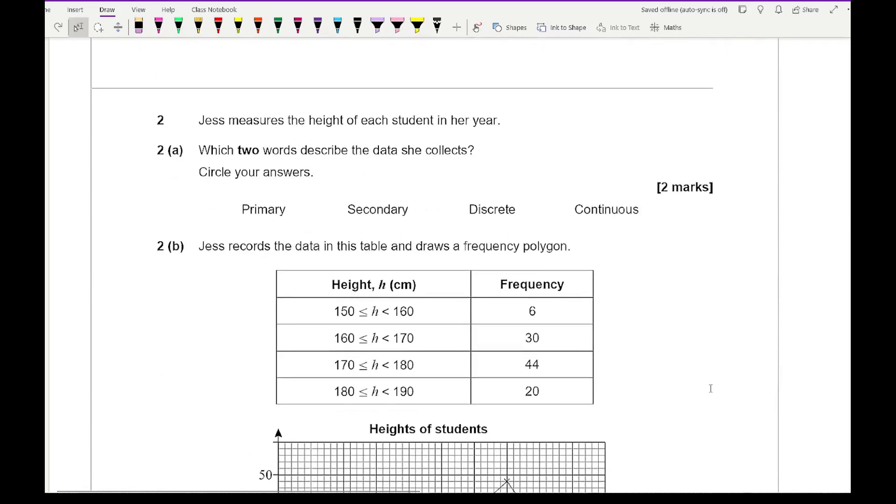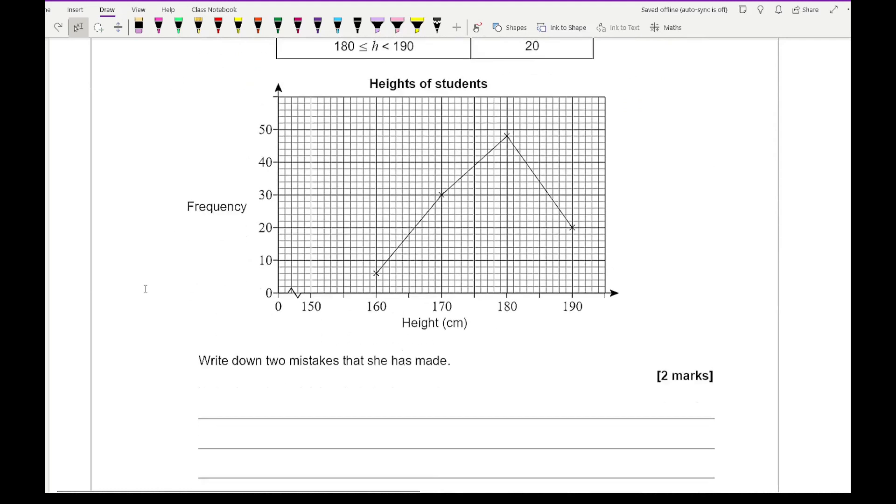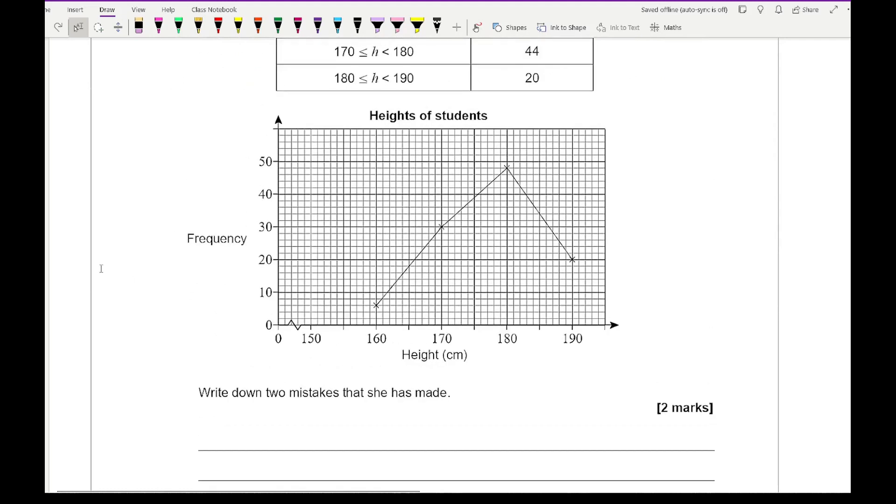Moving on to question 2, Jess measures the height of each pupil in her year. Which two words describe the data she collects? She is collecting the data, so it's going to be primary. It's going to be numerical data and it's going to be a range of values, so it's going to be continuous.